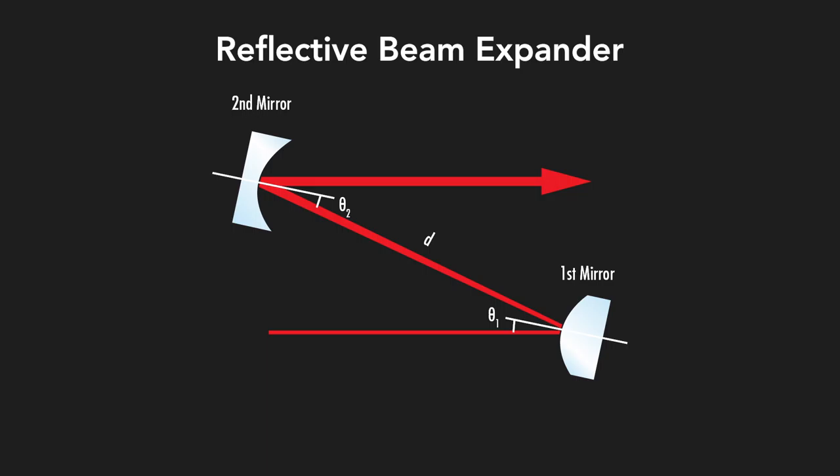The next mirror in the system is typically a concave mirror, spaced the sum of the two mirror's focal lengths away. This spacing is very important. If you were to place the mirrors any distance apart that does not equal the sum of their focal lengths, you will not output a collimated beam.